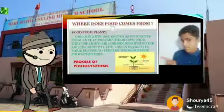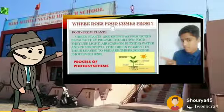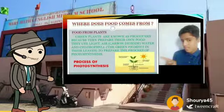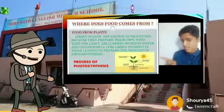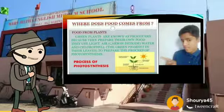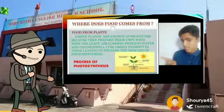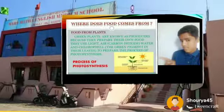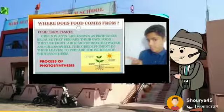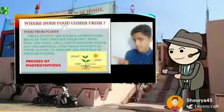Let us start. Where does food come from? Food comes from plants and animals. But does anyone know how food comes from plants — how do plants make their food? Plants make their food by the process called photosynthesis.